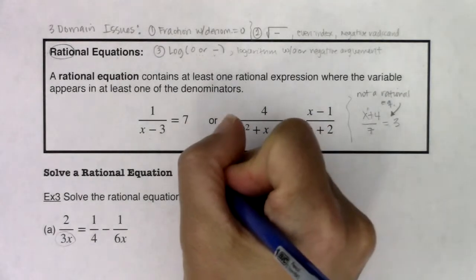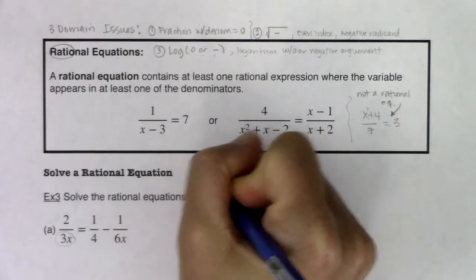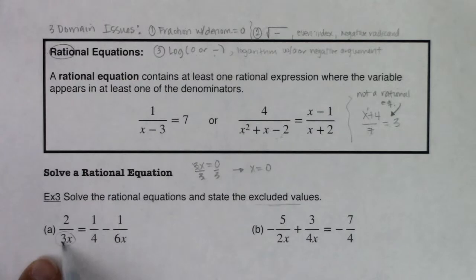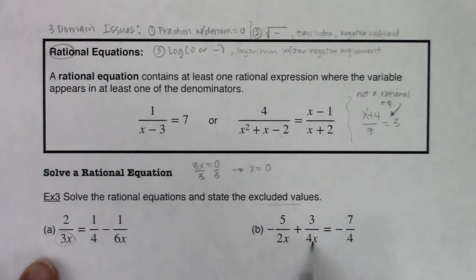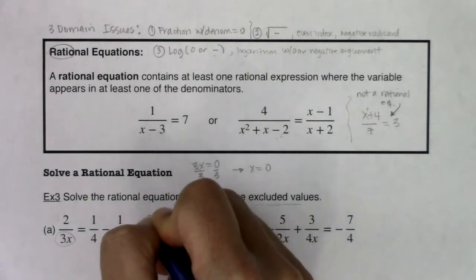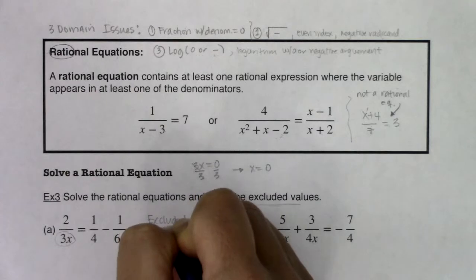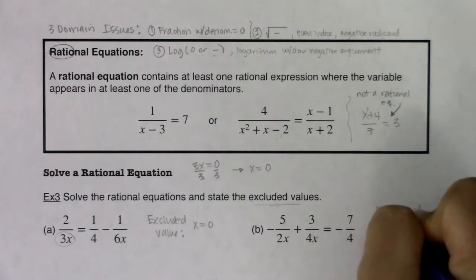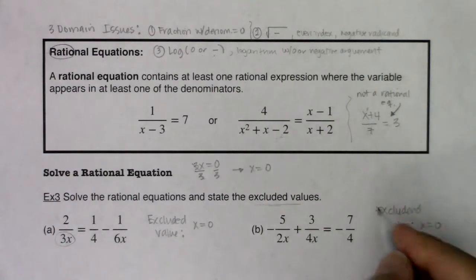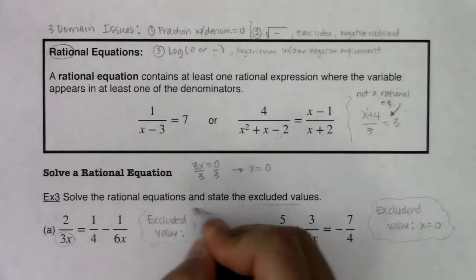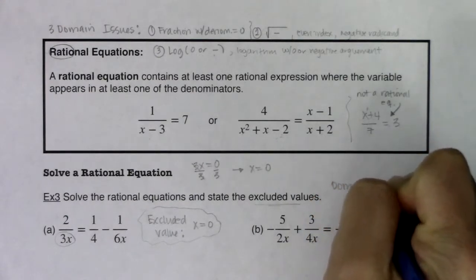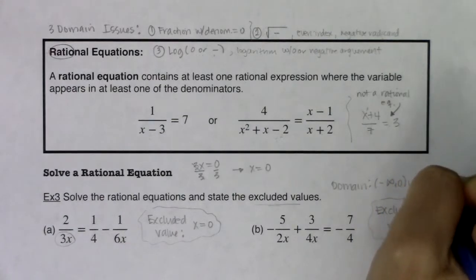To determine excluded values, set your denominators — the ones with variables — equal to zero. If I set 3x equal to zero and divide by 3, I get x equals 0. You can see: 3 times 0 is 0, that's a problem. The same holds for 6 times 0, 2 times 0, and 4 times 0. So the excluded value for both of these examples is x equals 0. When we turn these into functions and I ask for the domain, you'd say all real numbers except 0, written in interval notation as negative infinity to 0 union 0 to infinity.